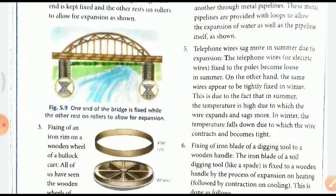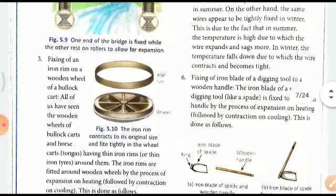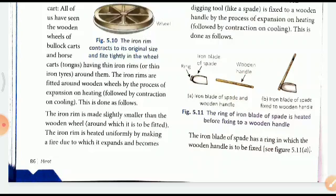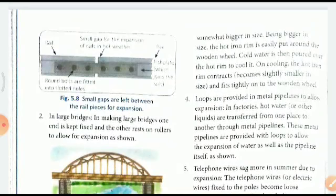The fixing of an iron rim on a wooden wheel of a bullock cart: wooden wheels of bullock carts and horse carts have thin iron rims fitted around them by the process of expansion by heating, followed by contraction on cooling. The rim is initially made slightly smaller than the wooden wheel, then heated uniformly so its size increases and it fits onto the wheel, then allowed to cool so it shrinks and gets fixed tightly on the wheel.